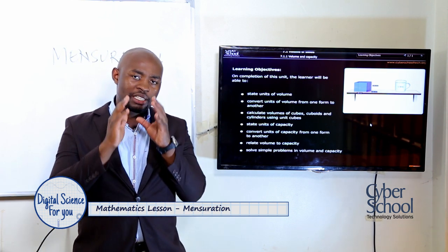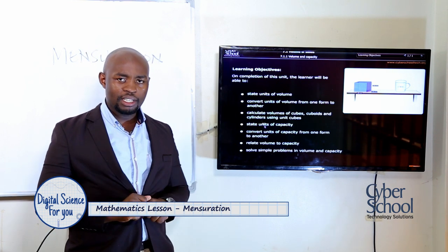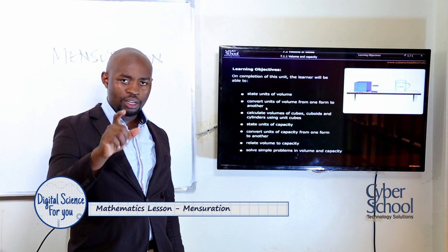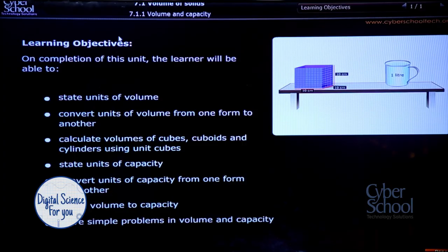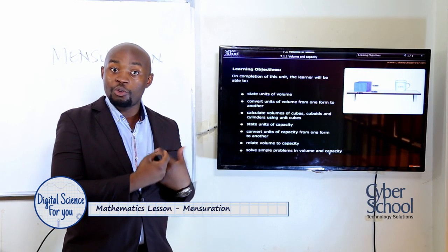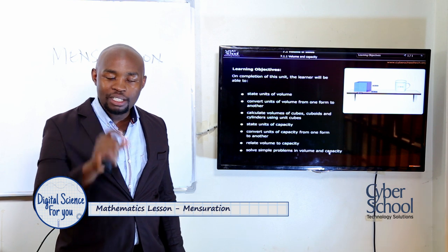For teachers at home, Digital Science has come as a solution for you. If you're making a lesson plan, your objectives are right there, stated clearly. Under Digital Science today we're going to Senior 3, looking at Mathematics — volumes of solids. The objectives: know how to set the units of volume, convert units of volume, calculate volumes of cubes, cuboids and cylinders using unit cubes, state units of capacity, convert units of capacity, relate volume to capacity, and solve simple problems in volume and capacity. Capacity is what you have normally in liters, while volume is what is mathematical.